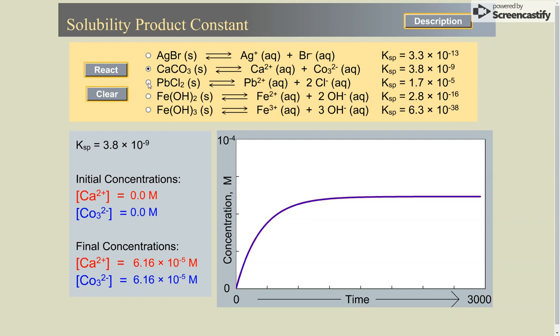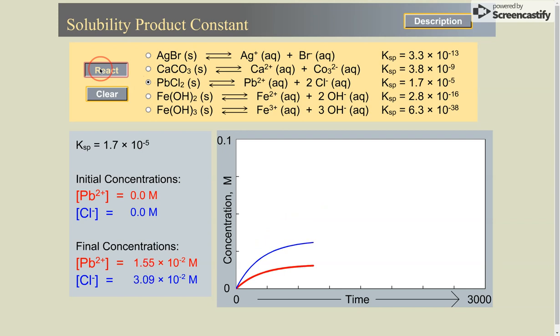Let's compare the AB2 salts so we can look at lead chloride. And notice what happens here. We don't have the same amount of ions because every one lead chloride forms one lead 2 plus ion and two chloride ions.